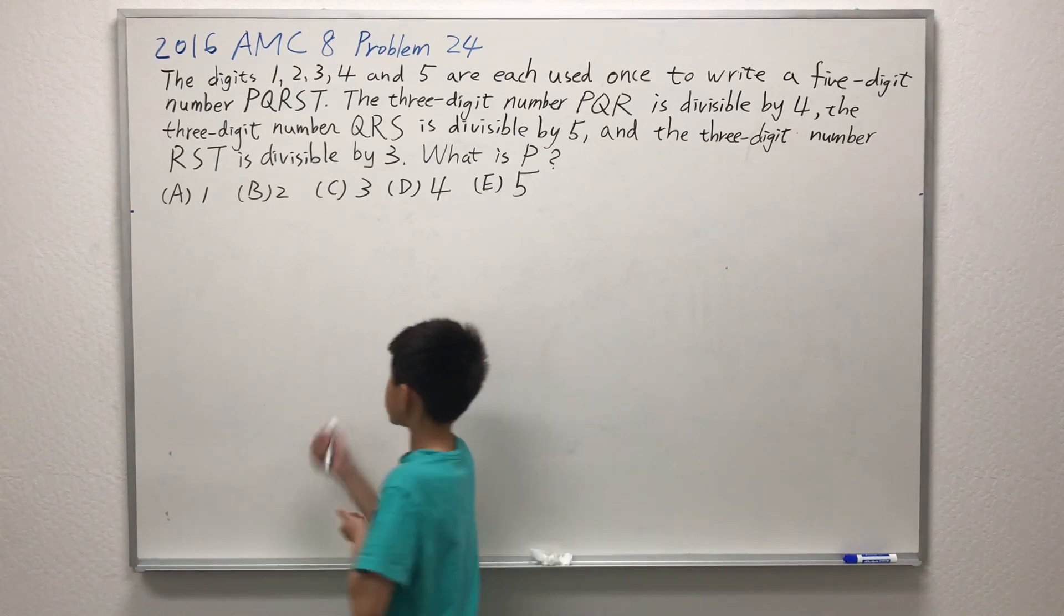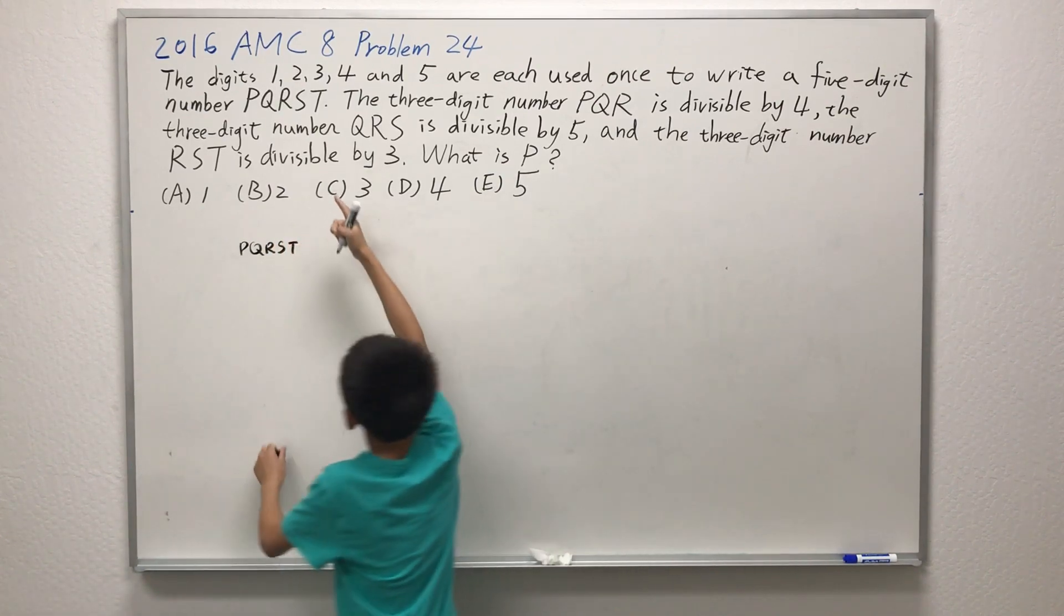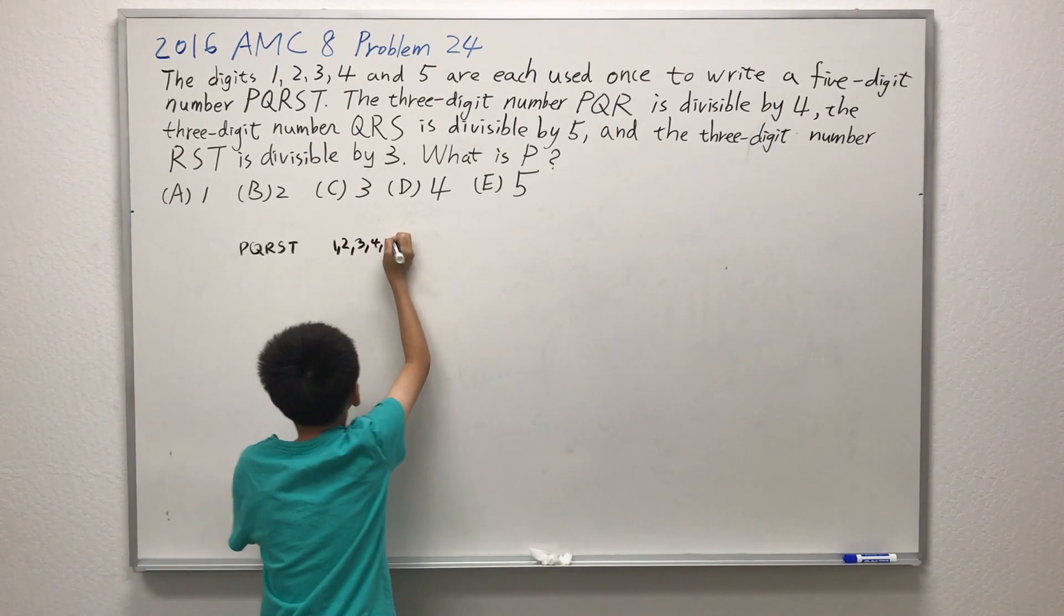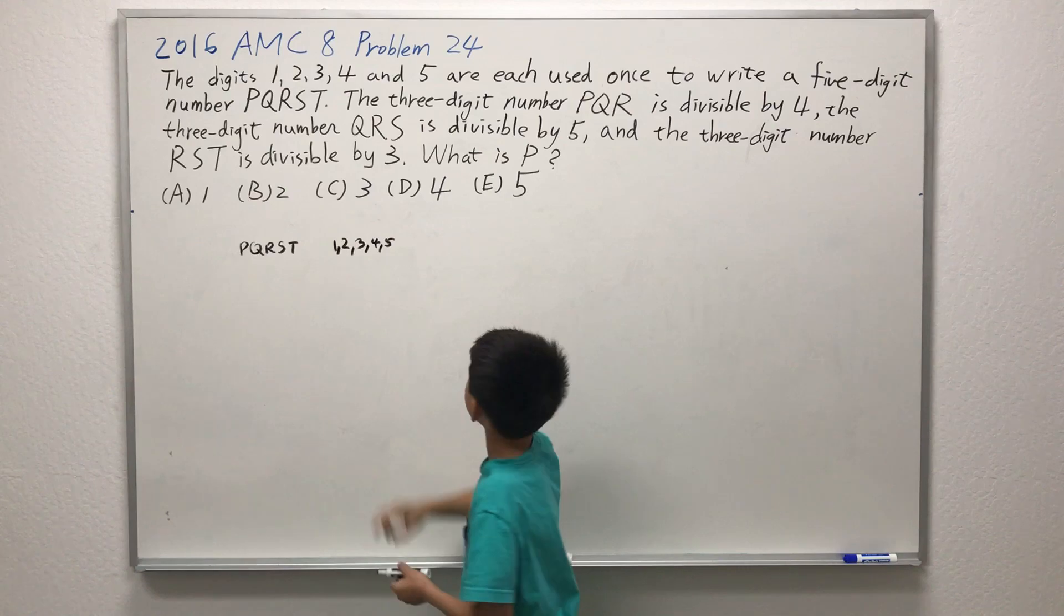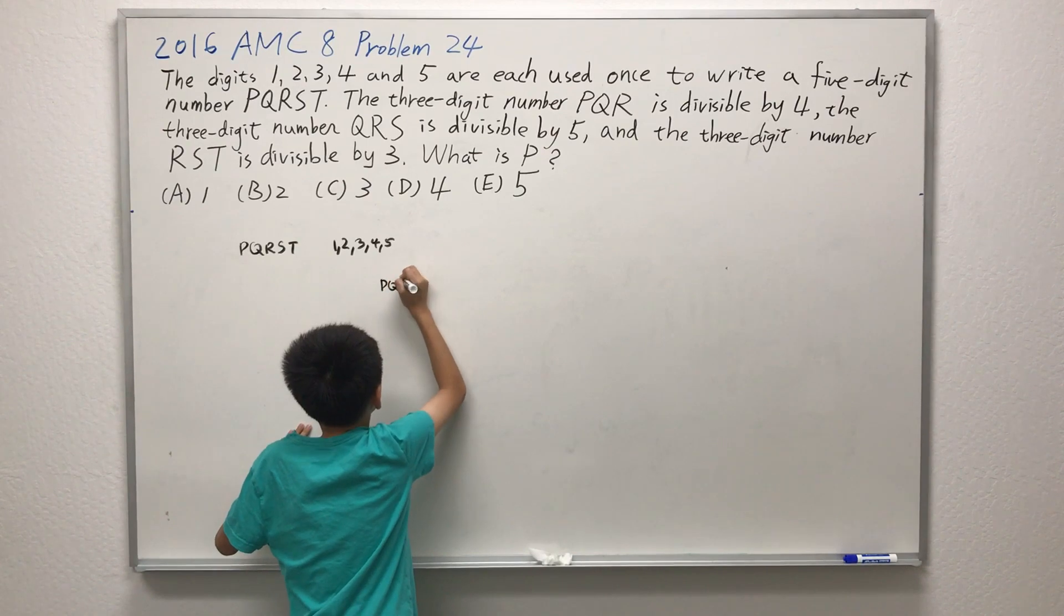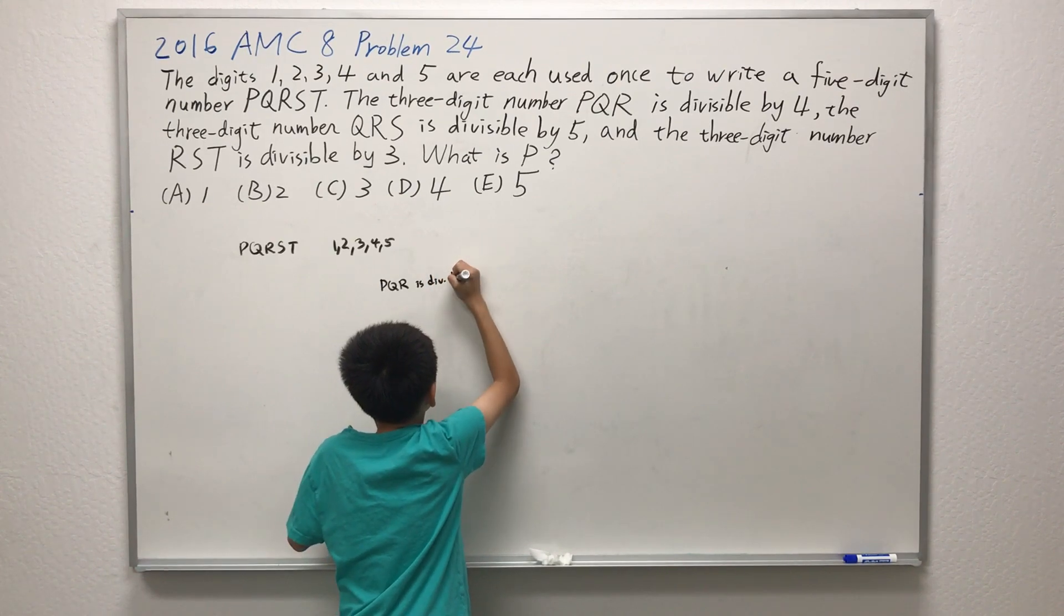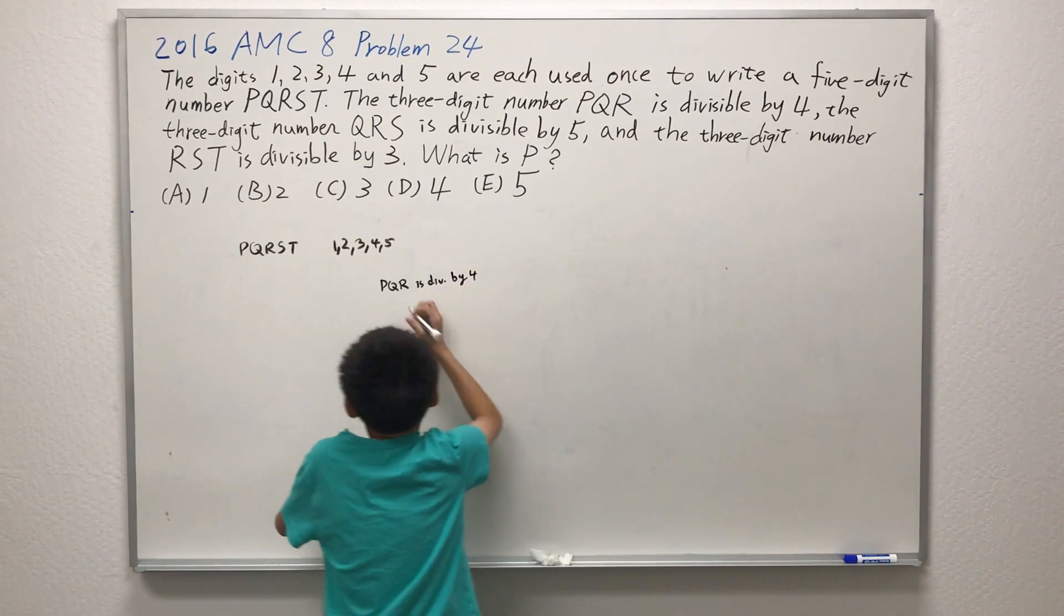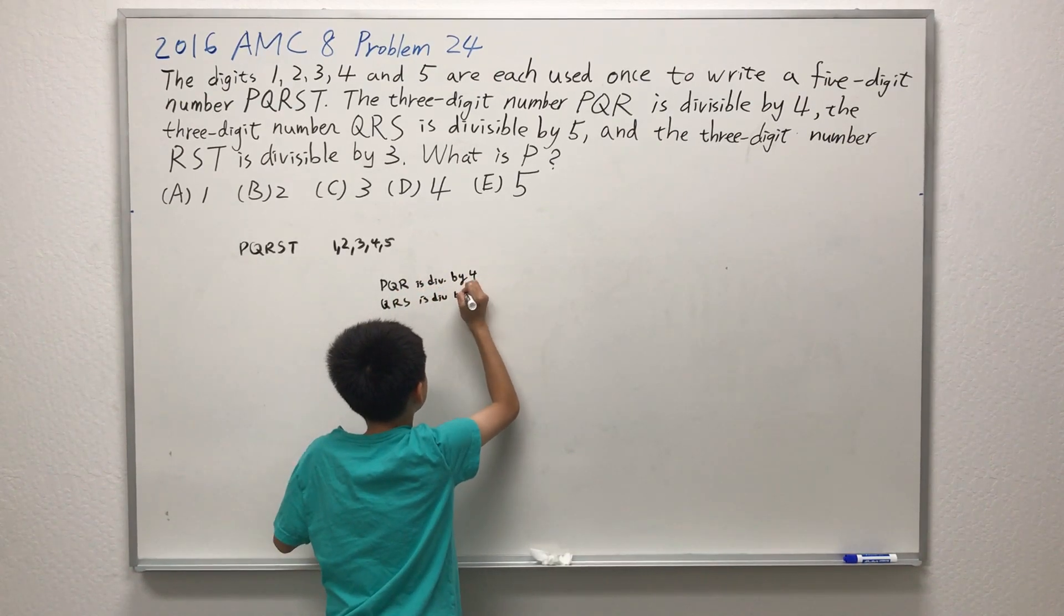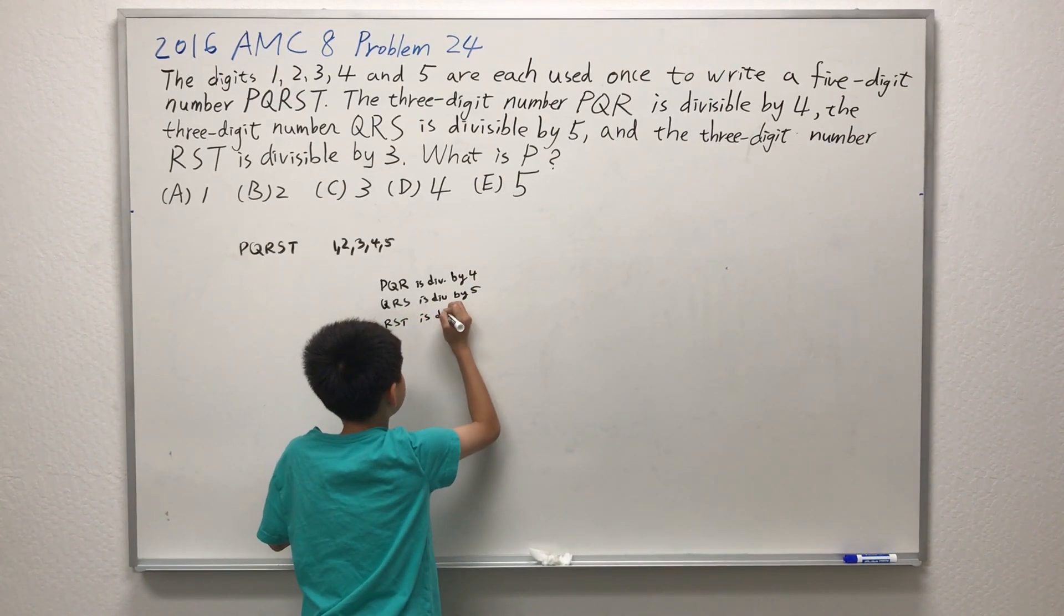The problem tells us that there is a 5-digit number PQRST, which consists of the digits 1, 2, 3, 4, 5, and each digit is only used once. Now it says PQR is divisible by 4, QRS is divisible by 5, and RST is divisible by 3.